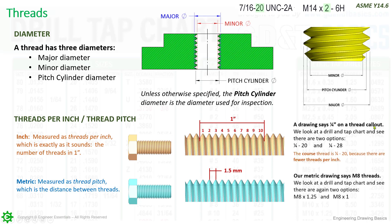On the metric ones, going to an M8 — if you look at the tap drill chart for an M8, the first one listed is going to be an M8 by 1.25, and the second one is going to be an M8 by 1. So the default here is going to be that 1.25.